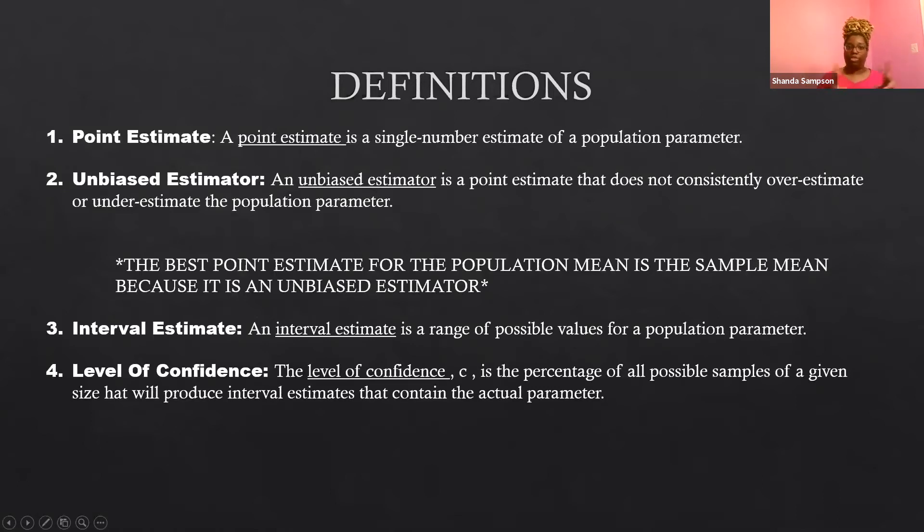So the interval estimate is a range of possible values for a population parameter. So we have this range, right? Have this range from 100 to 150. Whether I said my point estimate is 125, which is an exact number, right? Or I said my estimate was between 100 and 175.